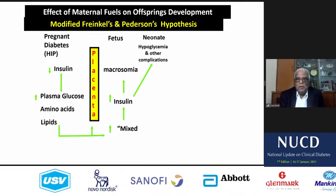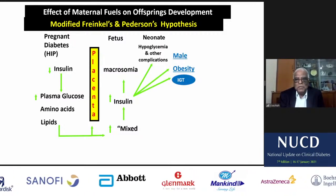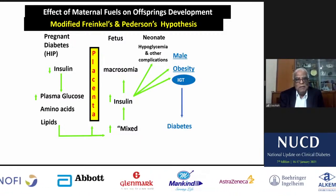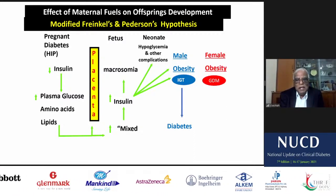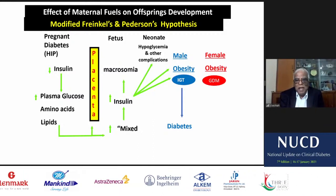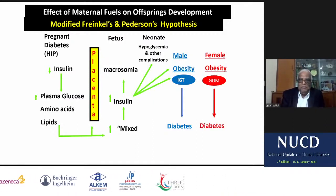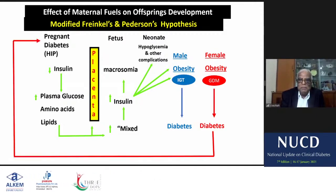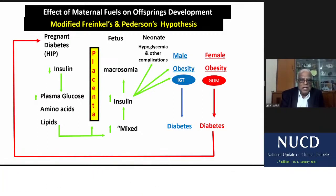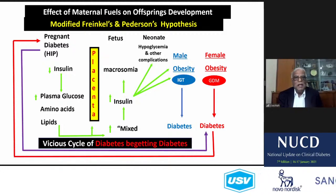When the child is born — if it is a male child, there is obesity and impaired glucose tolerance, finally leading to diabetes. If it is a female child, there is obesity, GDM will occur, and again diabetes. But the problem is: in the male this stops at IGT or diabetes, whereas in the female, this is a vicious cycle — the diabetic woman will again become diabetic. Diabetes begets diabetes. You have to break this vicious cycle.